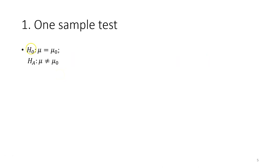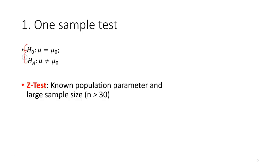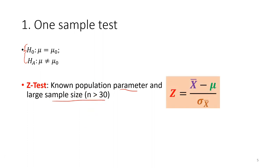For a one-sample test we will have a pair of statistical hypotheses. The z-test is the test we use when we know the population parameter and the sample size is more than 30. This formula should be familiar to you, as we discussed it in detail in the Week 4 and 5 lectures. If you have forgotten, please revisit the Week 5 lecture on how to calculate the standard error for the mean.